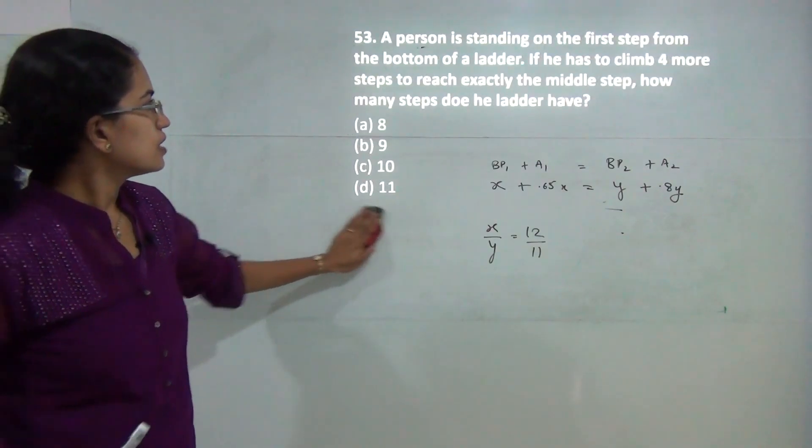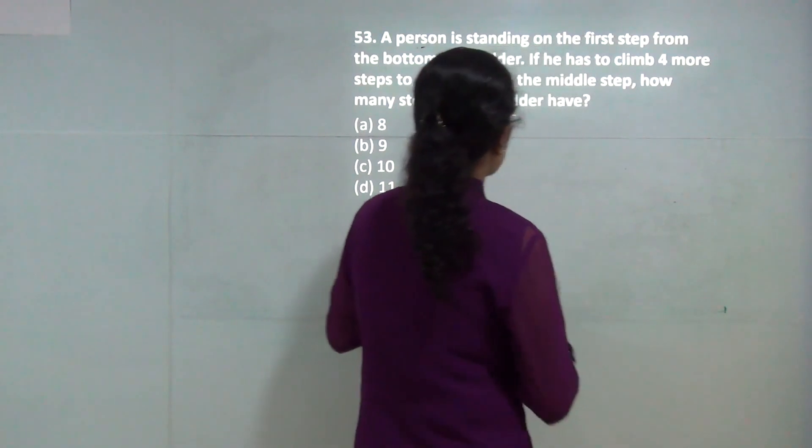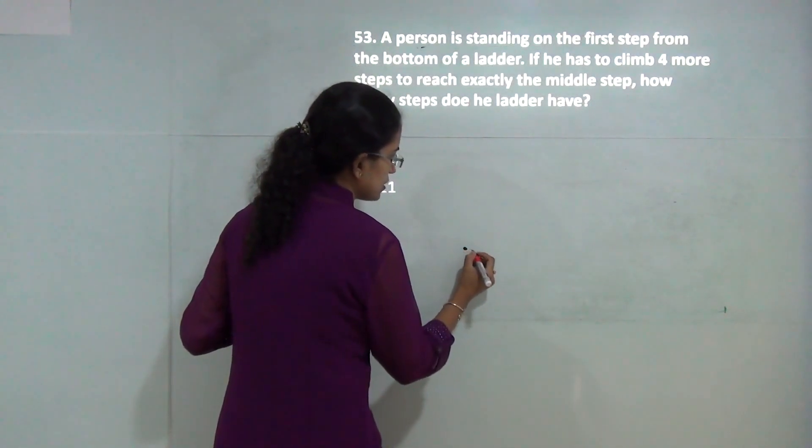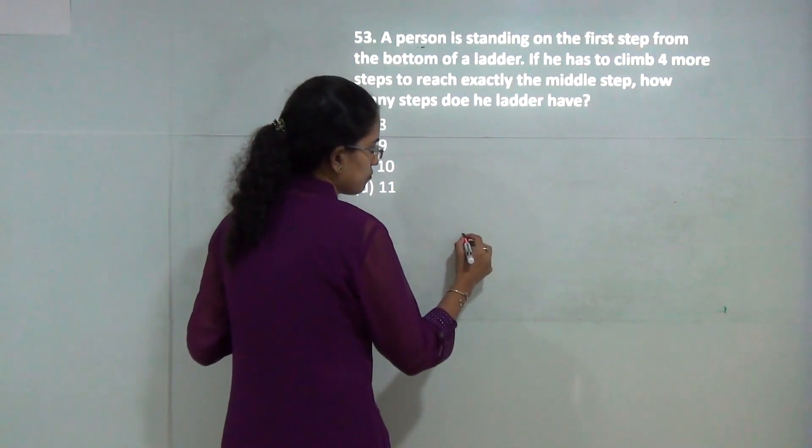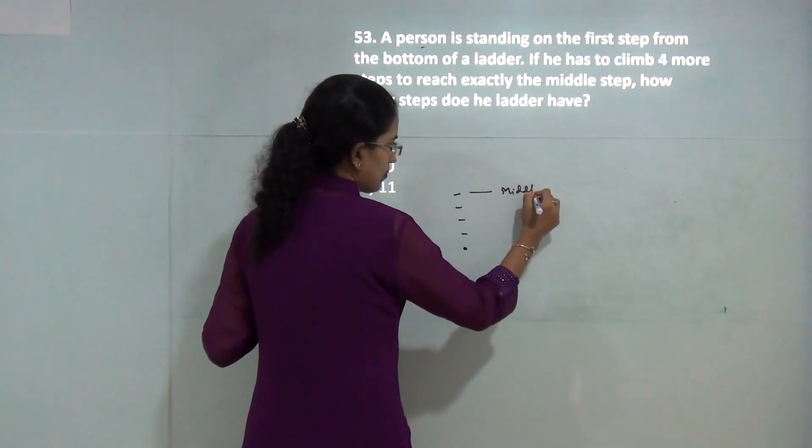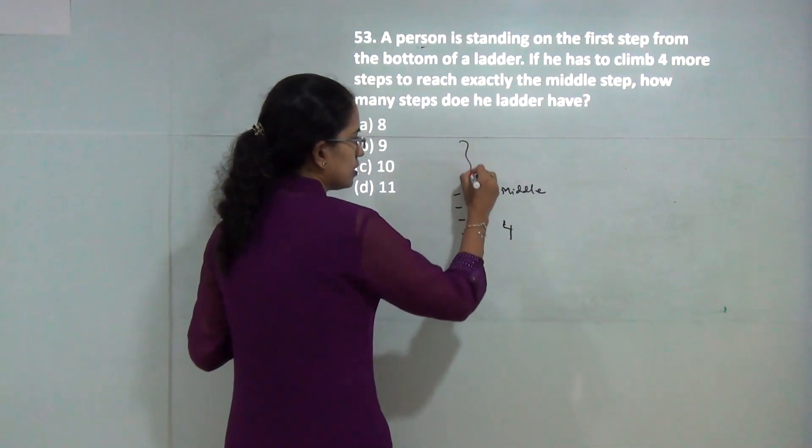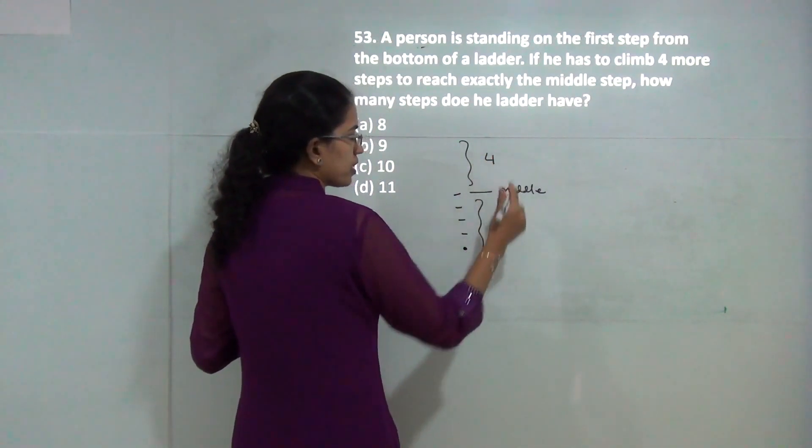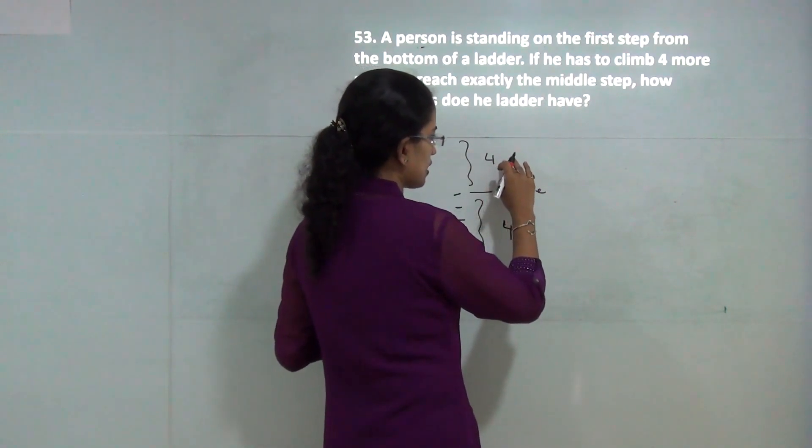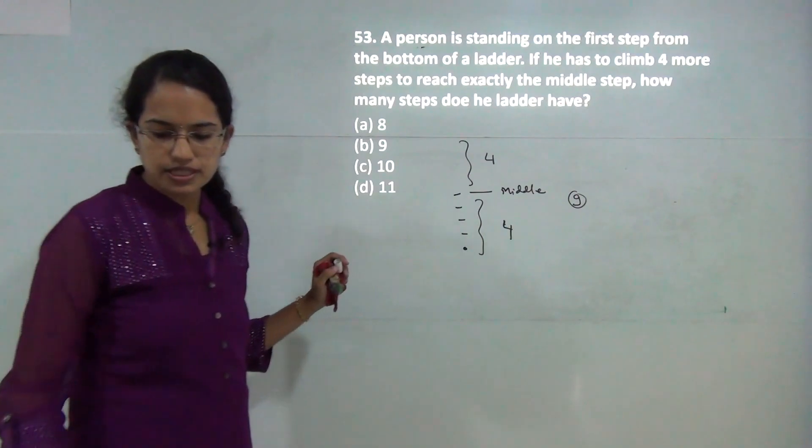Next question: a person is standing on the first step of a ladder, then climbs 4 more steps and reaches the middle. So there are 4 steps below and 4 steps above the middle. The total would be 4 plus 4 plus 1, which is 9 steps.